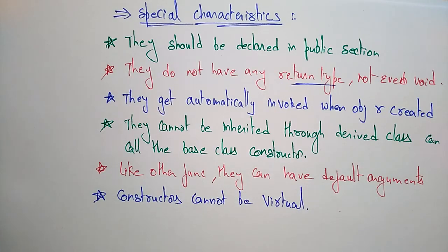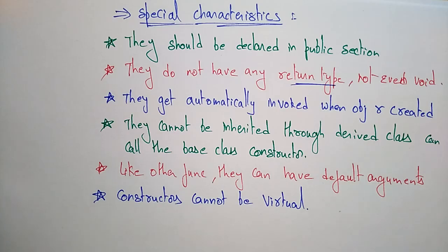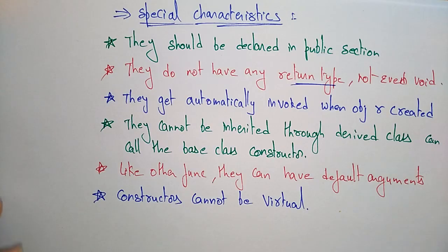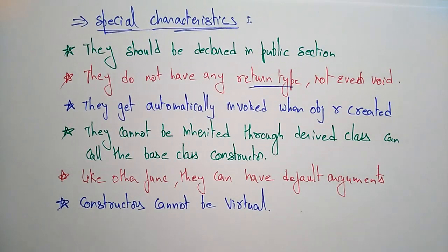Constructors allocate some memory space — when you declare a constructor, it automatically occupies space in memory. They cannot be virtual. A class can be virtual, but a constructor is not virtual. Though the class name and constructor name are the same, both are different in this regard. These are the special characteristics of constructors. Thank you.